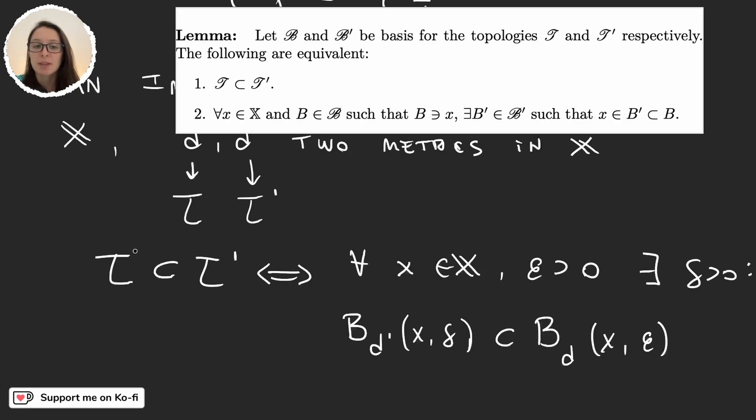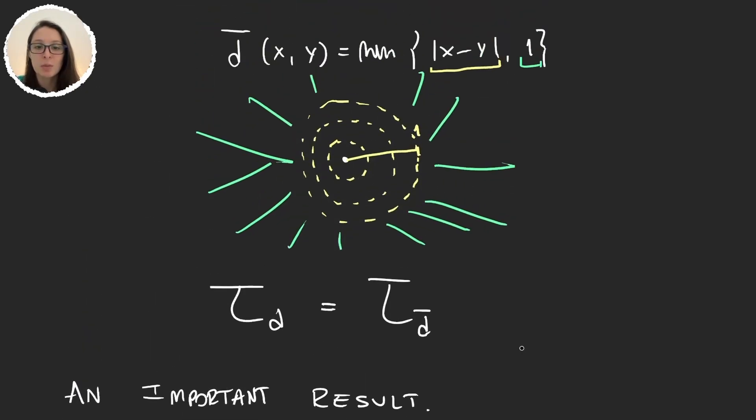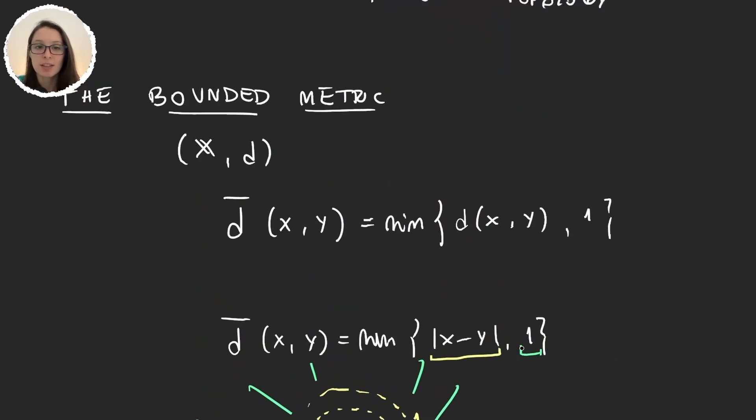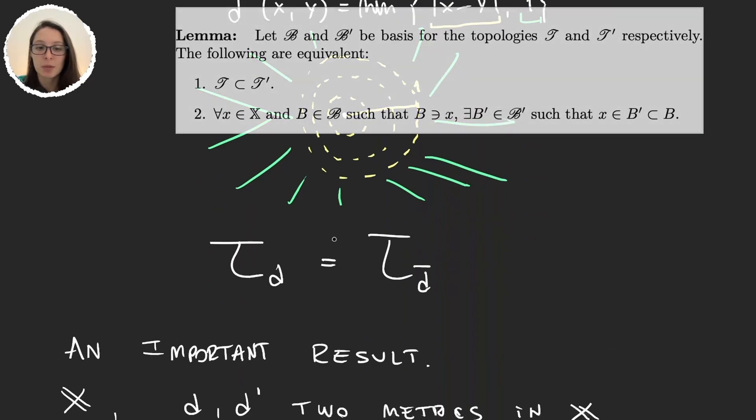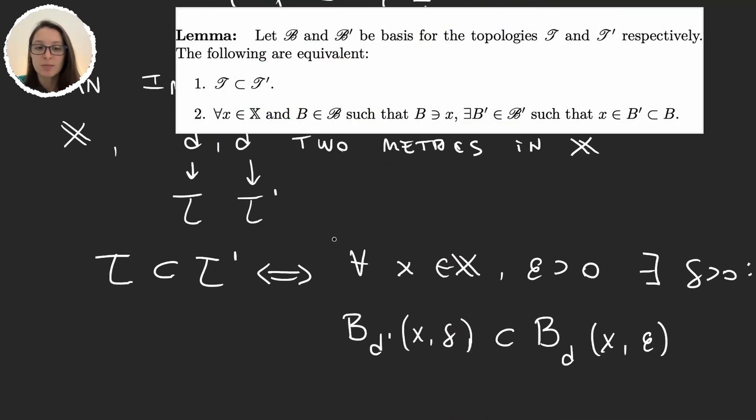So for every basis element in tau, that is for every x and epsilon for this basis element Bd, we want to find a basis element in tau prime, so we want to find a radius and this basis element that is contained here, and obviously this is something that we can do with these two metrics d and d bar, so that is why these two topological spaces are the same, because we can do this inclusion in both directions.